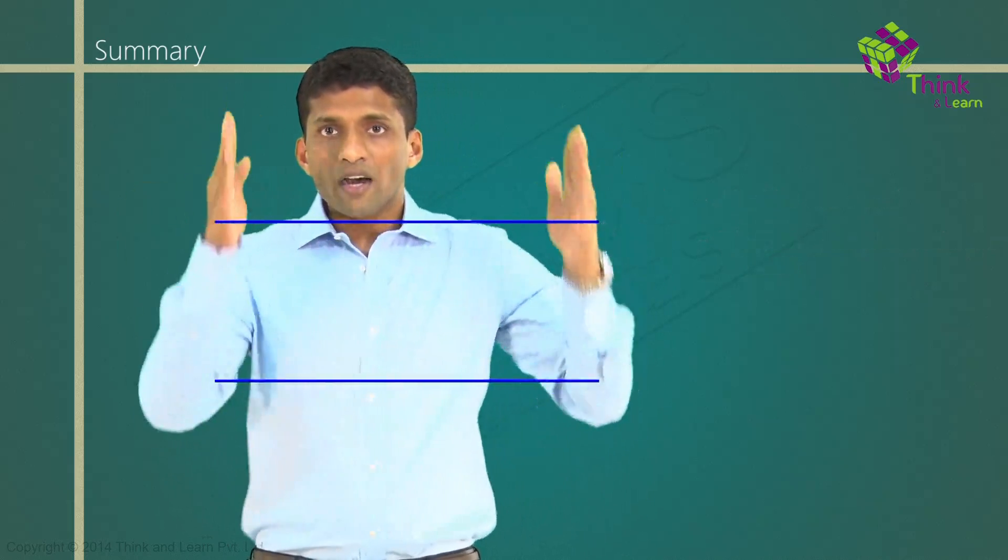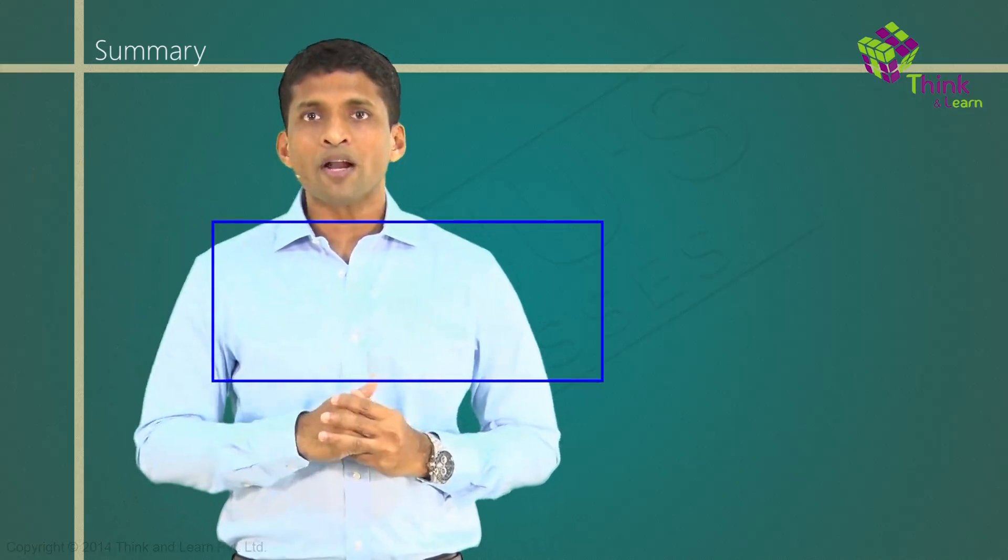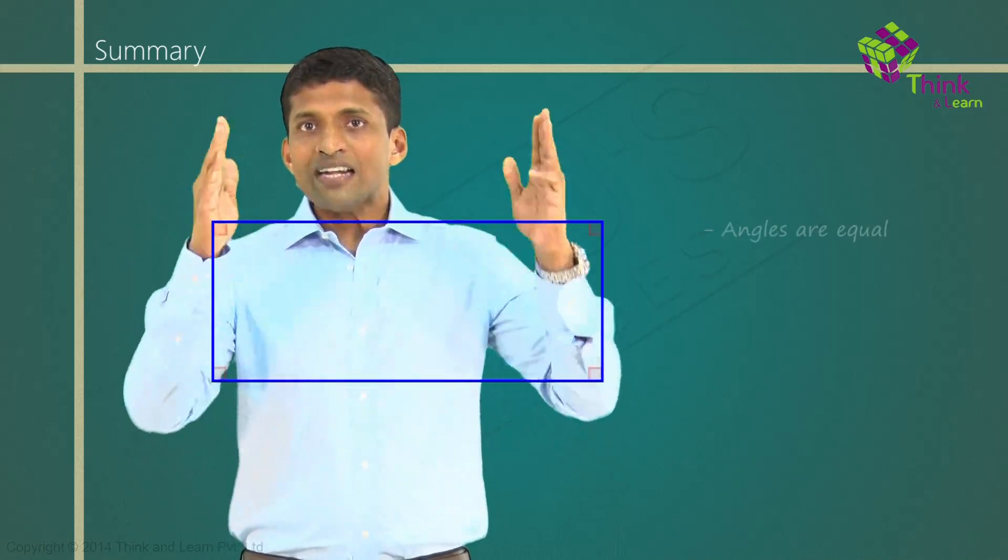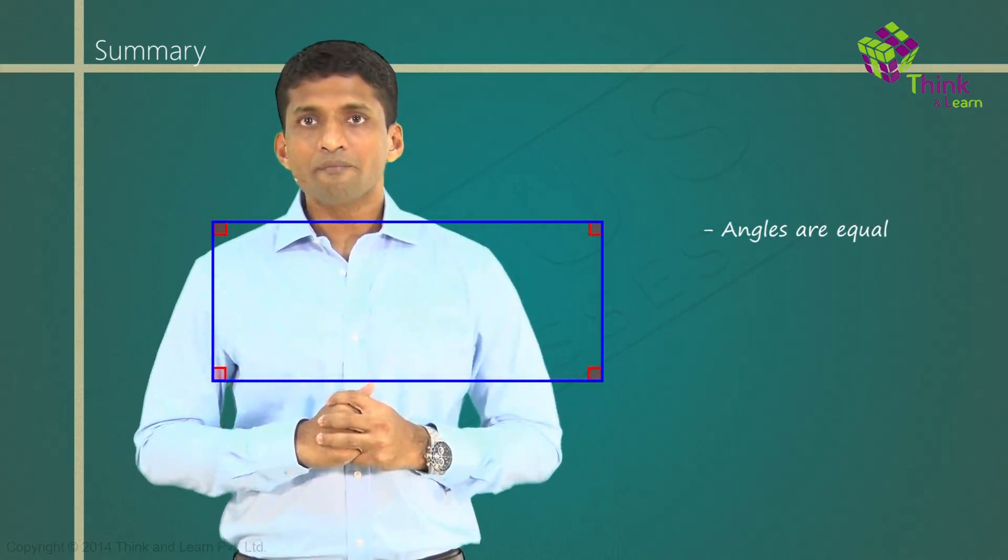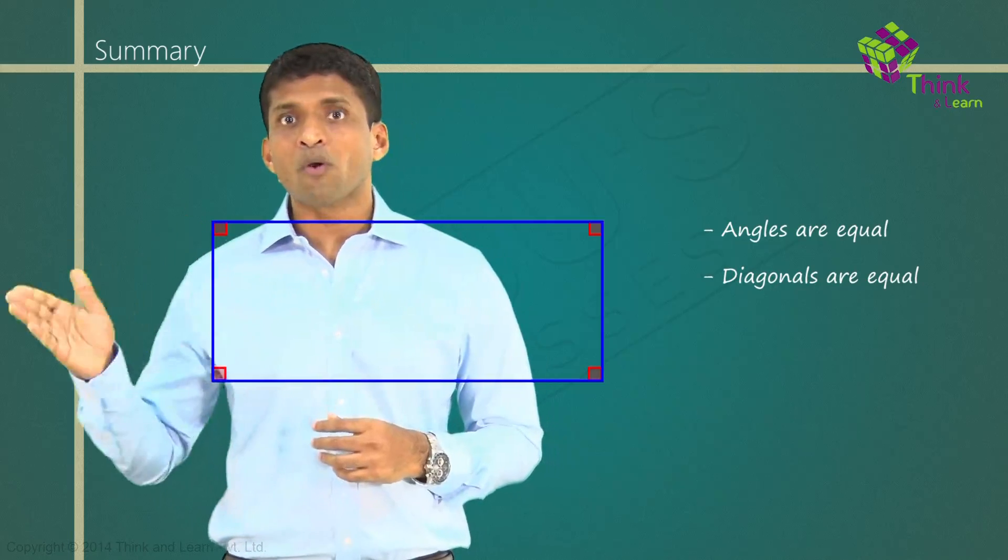Next, I will take a rectangle. Rectangle will have all the properties of a parallelogram. Angles are equal and equal to 90 degrees. And one more special property is diagonals are equal.